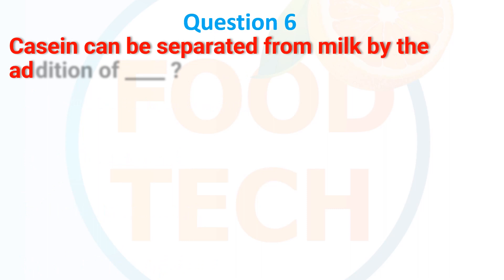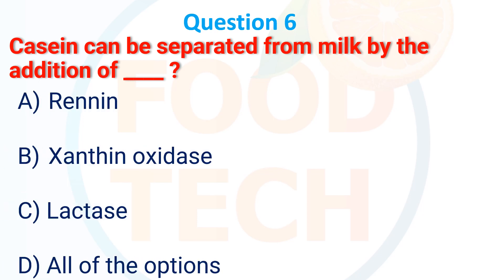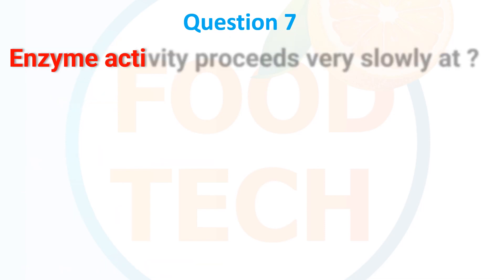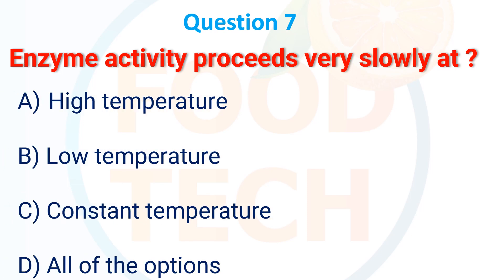Casein can be separated from milk by the addition of: A. Renin, B. Xanthine oxidase, C. Lactose, D. All of the options. The answer is A. Renin.